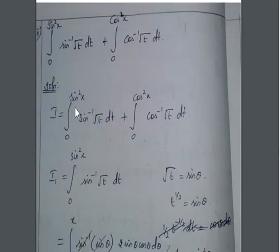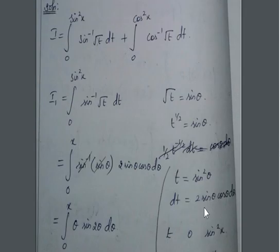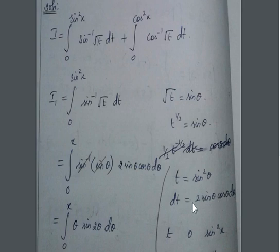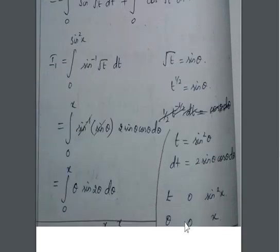I1 is the integral from 0 to sin²x of sin⁻¹(√t) dt. Let us take √t = sin θ, so t = sin²θ. Taking squares on both sides we get t = sin²θ. Now differentiating: dt = 2 sin θ cos θ dθ.